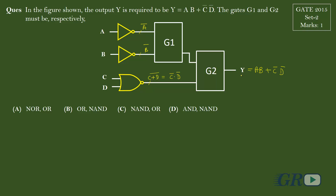At the output, we can see that one of the terms is readily available. By that logic, we can see that G2 can be an OR gate.